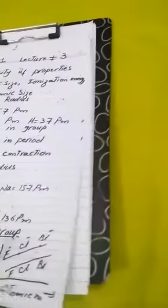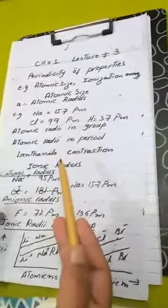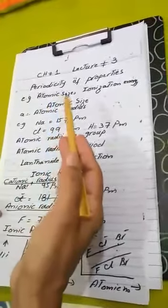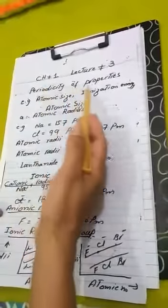Assalamualaikum, dear secondary class students, hope you will be fine. Today we will start our third lecture of chapter number 1. This chapter is related to the periodic table. Here we will discuss different properties of elements on the basis of the periodic table. Cyclic changes in the properties of elements after a regular interval in atomic number are called periodic trends. This is also known as periodicity of properties.